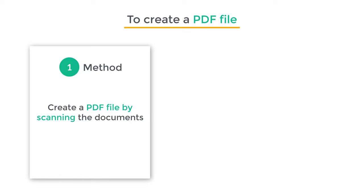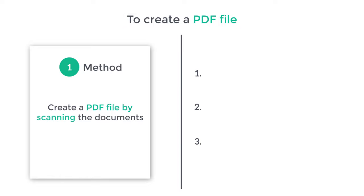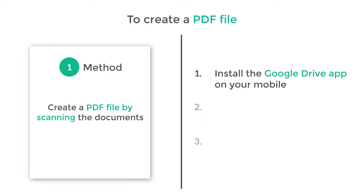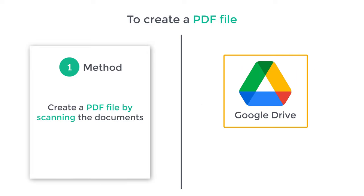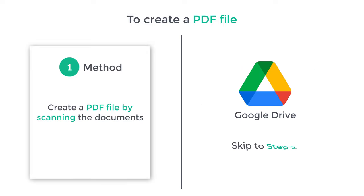Now to create a PDF file, we are going to do 3 steps. The first step is to install the Google Drive app on your mobile. Now if you already have this app, just skip to step 2 of this process.